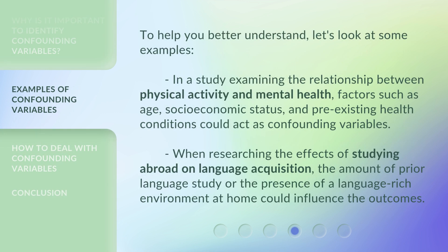To help you better understand, let's look at some examples. In a study examining the relationship between physical activity and mental health, factors such as age, socioeconomic status, and pre-existing health conditions could act as confounding variables. When researching the effects of studying abroad on language acquisition, the amount of prior language study or the presence of a language-rich environment at home could influence the outcomes.